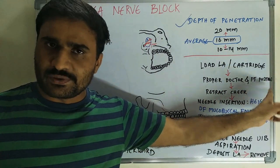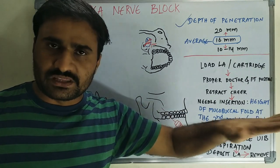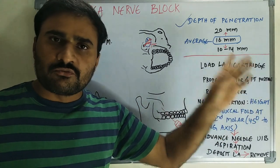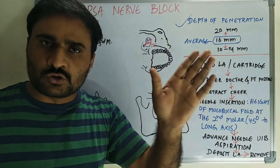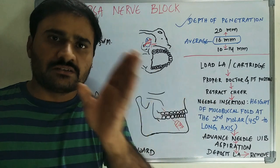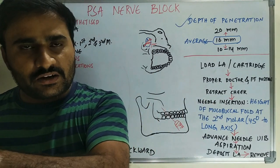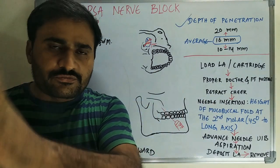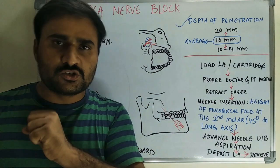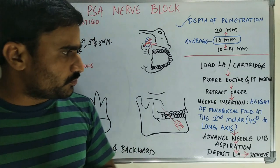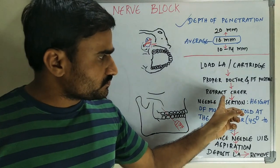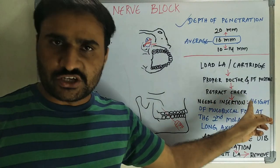Load the LA cartridge. Under proper position: patient position should be supine. Doctor position — for a right-handed operator performing a right-side PSA nerve block, assume the 8 o'clock position; for a left-side PSA nerve block, assume the 10 o'clock position. Then retract the cheek.